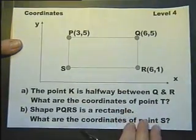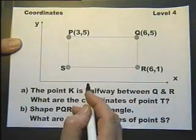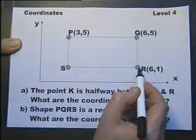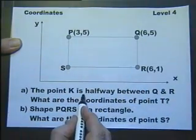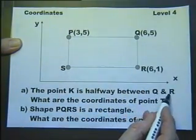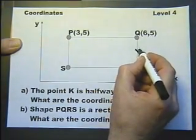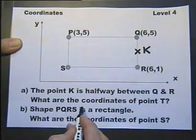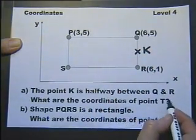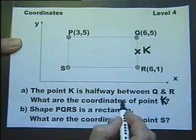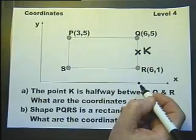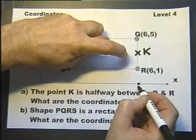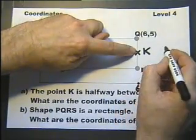Coordinates in the first quadrant. This is X, this is Y, and these coordinates have actually been given to you. The point K is halfway between Q and R. So halfway between Q and R is the point K. What are the coordinates of the point K? So this is the X coordinate, and it's 6 for Q and 6 for R, so it must be 6 for K as well.